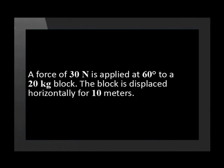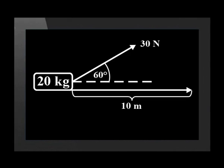Let us look at another example where the same applied force is acting on the same 20 kilogram block, but this time at an angle of 60 degrees. A force of 30 newtons is applied at 60 degrees to a 20 kilogram block, and the block is displaced horizontally for 10 meters. We can see in this example that the block moves 10 meters horizontally and not upwards at 60 degrees. In this case, work is done by the horizontal force, which is a component of the 30 newton force.